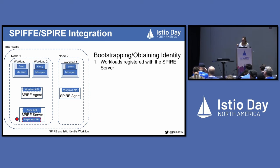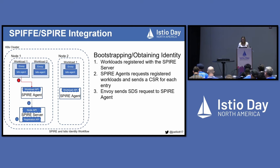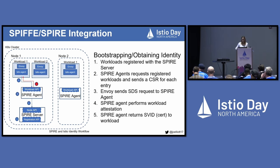At a high level, addressing both how you obtain workload identity and how you bootstrap SPIRE: workloads are registered with the SPIRE server, either manually or automatically. The SPIRE agent then requests those registered workloads relevant to that node and sends a certificate signing request for each entry. Envoy sends an SDS request to the SPIRE agent for its identity. The SPIRE agent performs workload attestation to verify that identity and returns the SPIFFE verifiable identity document or certificate to the workload.